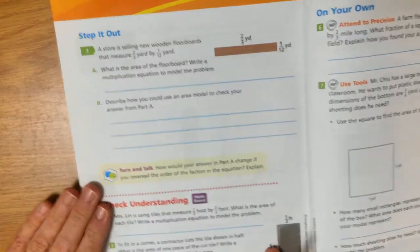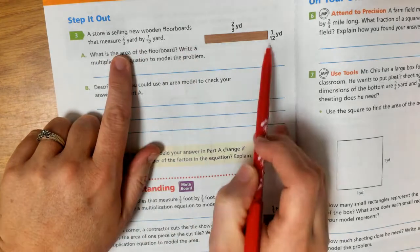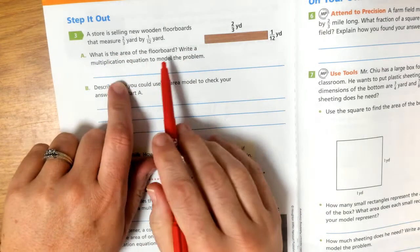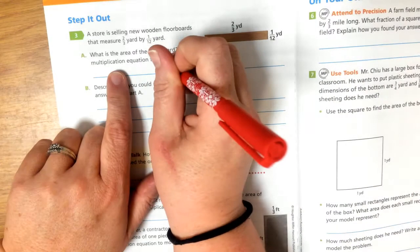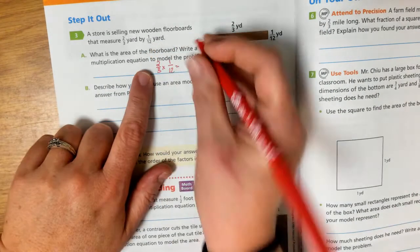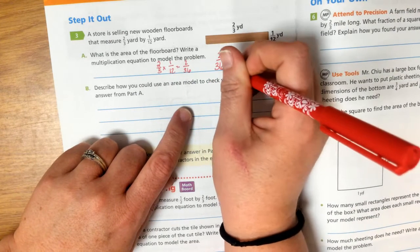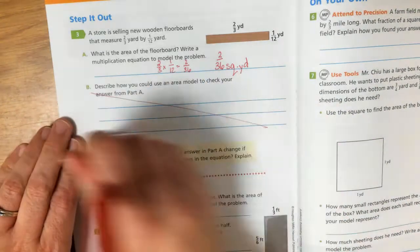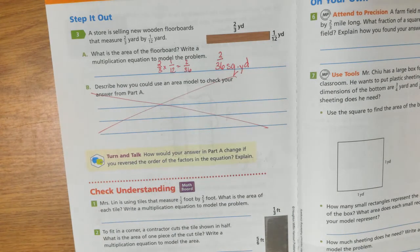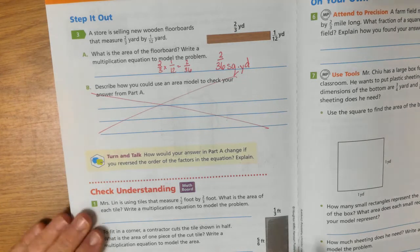So could we do this without drawing a picture? I think we could. So a store is selling new wooden floorboards that measure 2 thirds yard by 1 twelfth yard. What is the area of the floorboard? So remember area, length times width. So we would have 2 thirds times 1 twelfth. 2 times 1 is 2. 3 times 12 is 36. So the answer is 2 36ths square, and our label is yards. We're not going to worry about drawing the area model to check. Because if we can multiply top by bottom, or if we can multiply, we should be able to do this without drawing a picture.